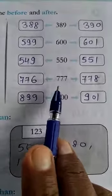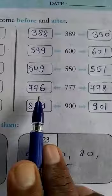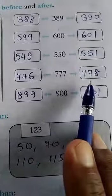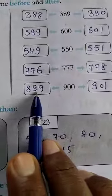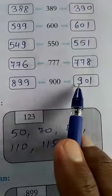777. Before number is 776, after is 778. 900. Before number is 899 and after number is 901.